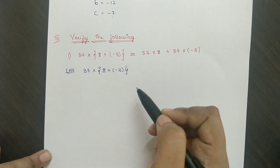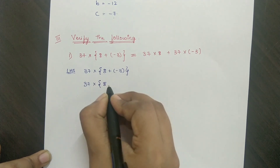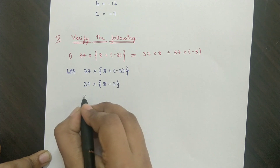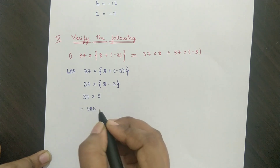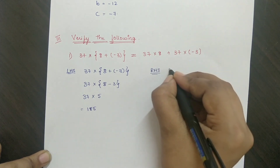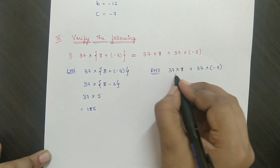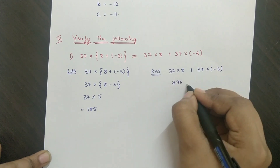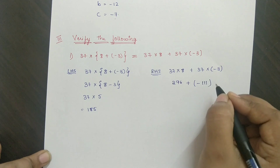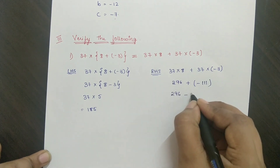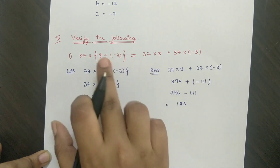Verify the following. Take LHS: 37 into 8 plus minus 3 equals 37 into 5 equals 185. RHS: 37 into 8 plus 37 into minus 3, which is 296 minus 111 equals 185. Since LHS equals RHS, it is verified.